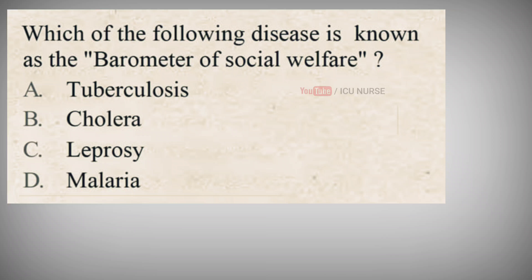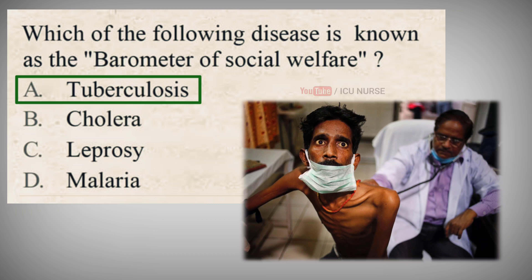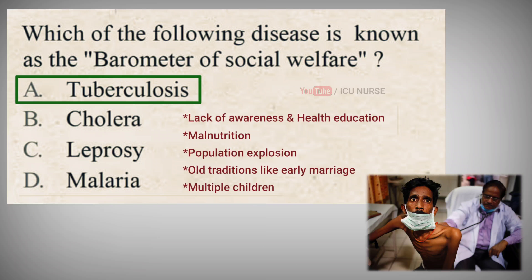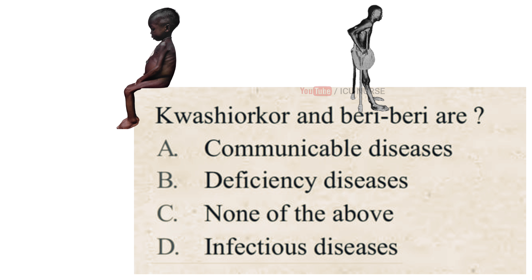Which of the following disease is known as the barometer of social welfare? A. Tuberculosis, B. Cholera, C. Leprosy, D. Malaria. The correct answer is A. Tuberculosis. Tuberculosis is a disease frequently encountered in the low socioeconomic group and hence called the barometer of social welfare. Lack of awareness and health education, malnutrition, population explosion, and old traditions like early marriage and multiple children are social factors contributing to tuberculosis.